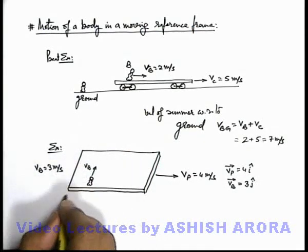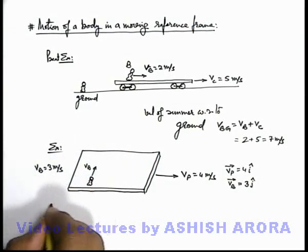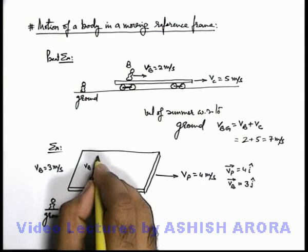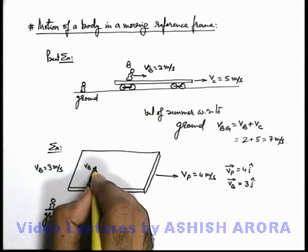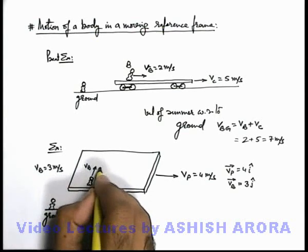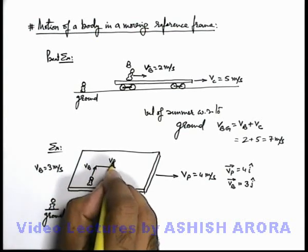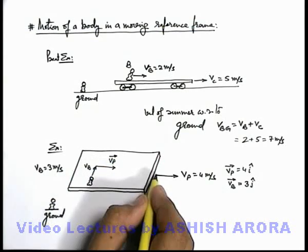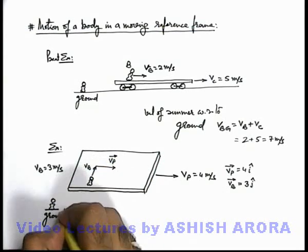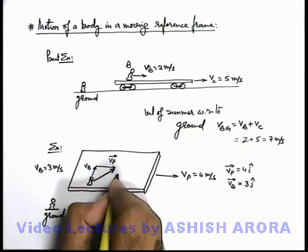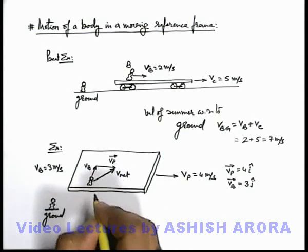Now as we observe this runner from the ground, a ground observer will feel that the runner is moving in the y direction as well as having a velocity v-p with which the platform is moving. So the observer will feel the runner is running diagonally — this is the net velocity of the runner.